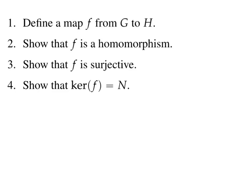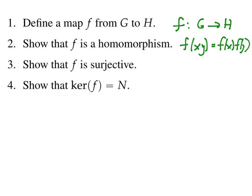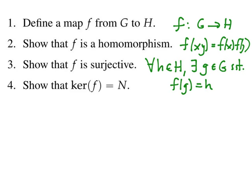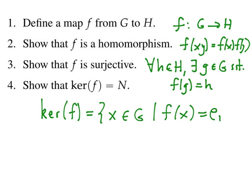In practice, this means we first define a map F from G to H. We then show that F is a homomorphism, which means showing the usual homomorphism property. We then have to show that F is surjective — that means for all H in H, there exists a G in G such that F of G equals H. This is a step where people tend to overthink things; just choose an element from H and find some element in G mapped to it by F. The last step is to show that the kernel of F equals N, where the kernel is all elements of G mapped by F to the identity element of H.